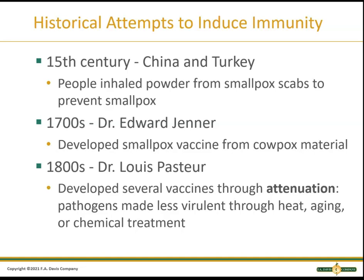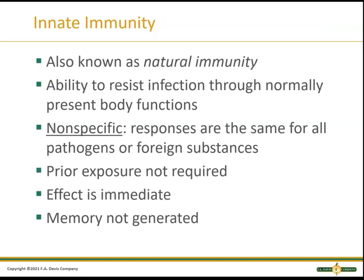Pasteur in the 1800s developed multiple vaccinations through what we call attenuation — bold in your textbook, meaning it's important. Attenuation just makes a pathogen weak, less virulent, less disease-producing. You can use heat, let it grow over time so it gets old and less pathogenic, or apply chemicals to make it extremely weak. The bacteria or virus might still be there, but the person will produce antibodies without getting sick from it.